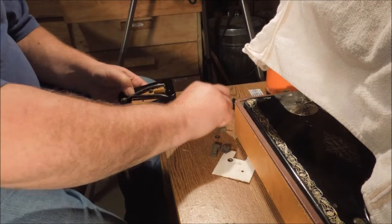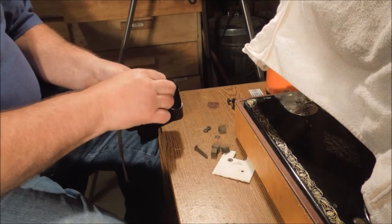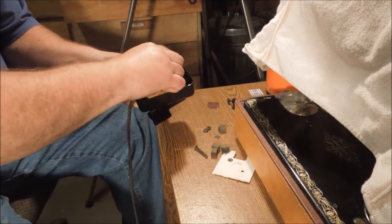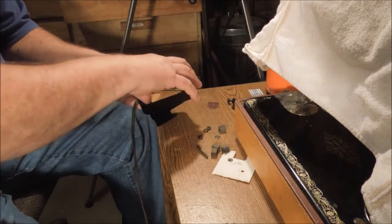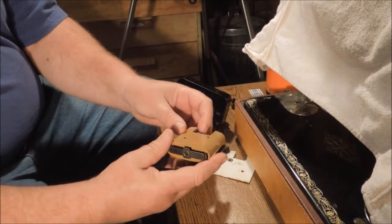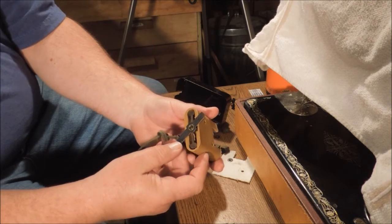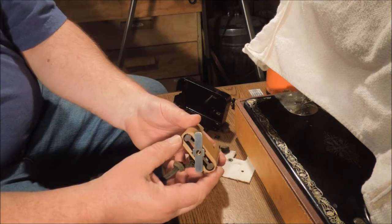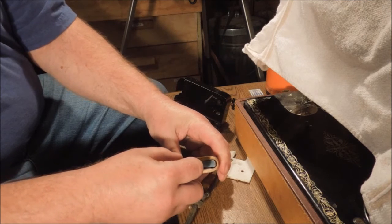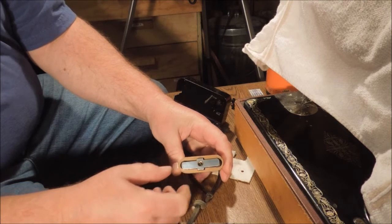This is a resistance type switch. There's a contactor inside there that presses on a set of coils. The tighter you push the coils, the less resistance there is and the faster the motor goes.